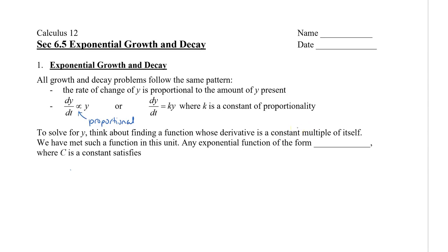Now, to solve for y, think about finding a function whose derivative is a constant multiple of itself. You've actually seen this function in this unit so far, and that is the exponential function. So we have y of t is equal to c times e to the power of kt.